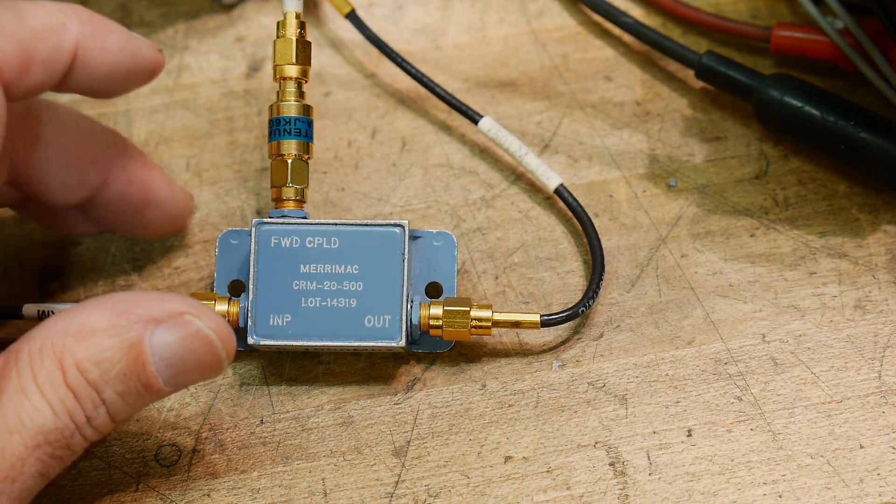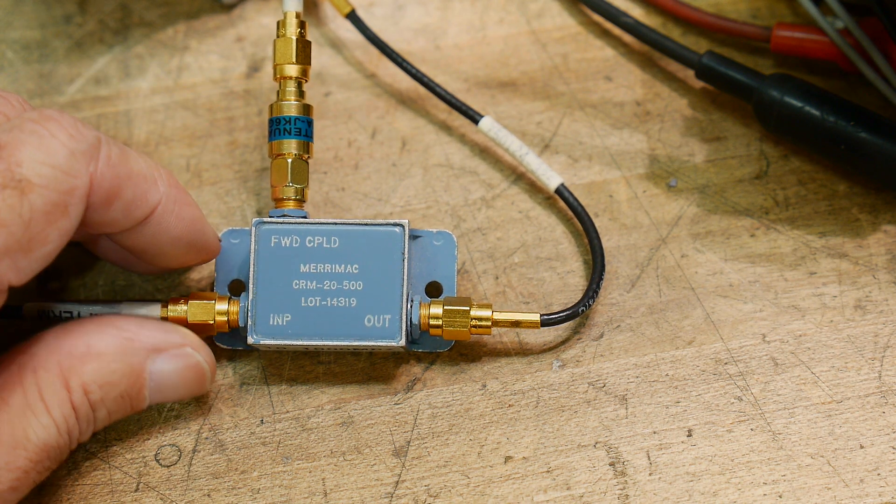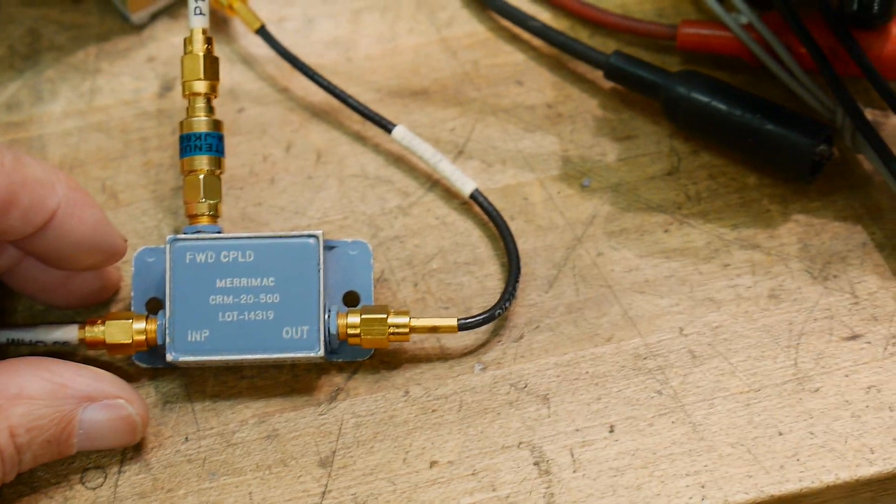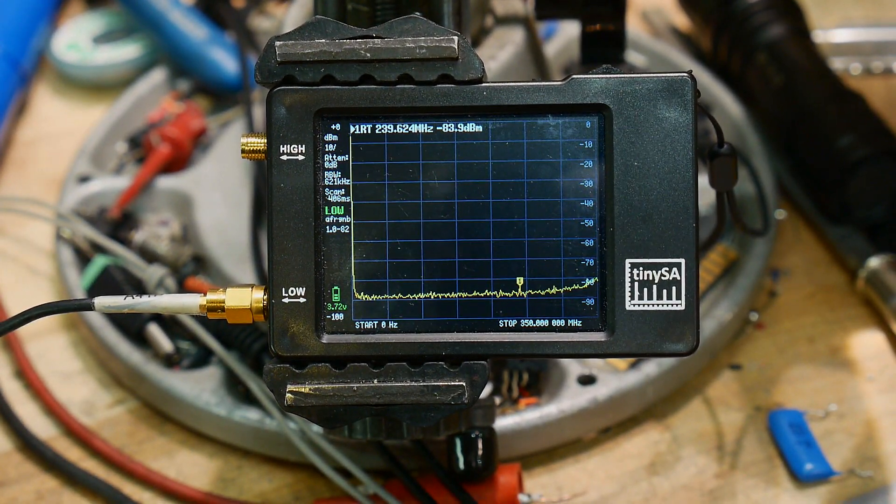Minus 13 dBm into the spectrum analyzer is still a quite healthy signal for a spectrum analyzer. So that's a good choice. So that's how you use the coupler.